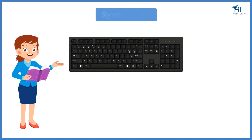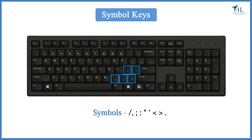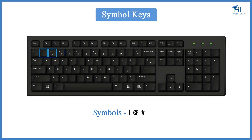There are other types of keys like symbol keys and special function keys present on the keyboard. Let us understand them briefly — we will learn about them in detail in the next class. Symbol keys have special signs and symbols. Symbol keys such as backslash, comma, colon, double quotes, single quote, lesser than, greater than, and full stop are placed to the right of the letter keys. Some symbol keys are placed over the numbers on the number keys, such as exclamation, at the rate, hash, dollar, and percentage.